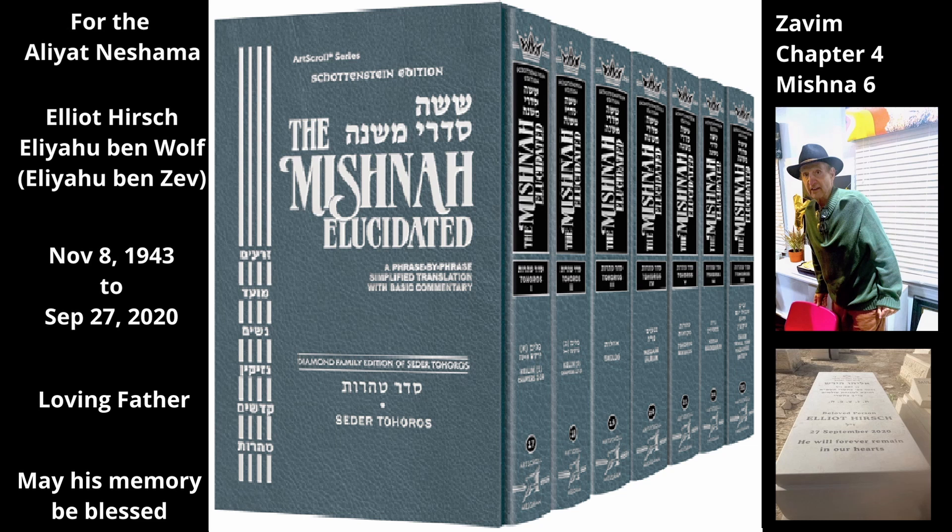The general theme of our Mishnah is that only a Zav and similarly Tameh people like a Zav or Anida, but no other source of Tumah, can make something Tameh through Hesed.